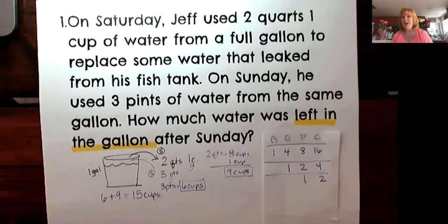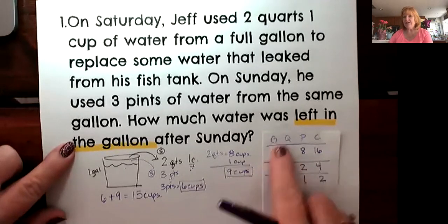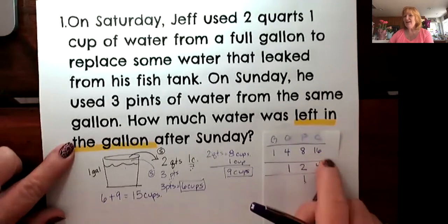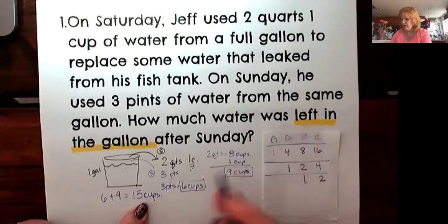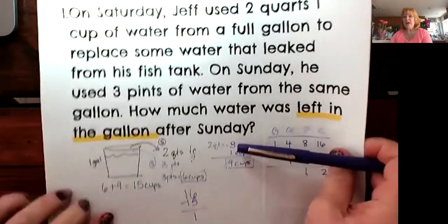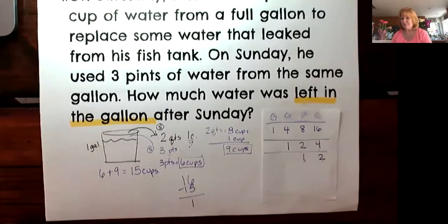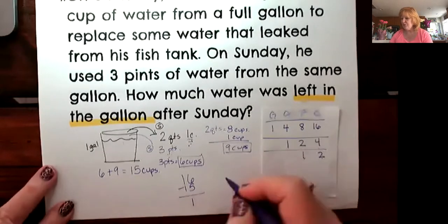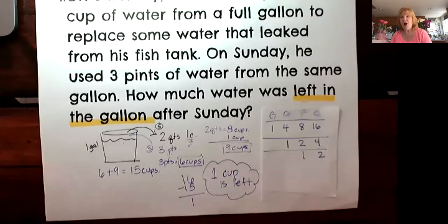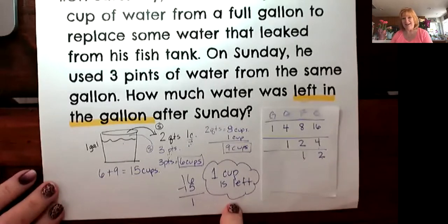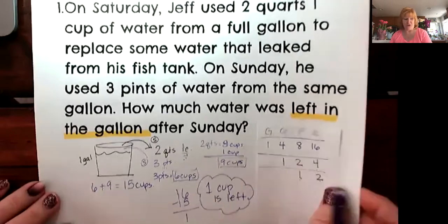Am I done? No, because it didn't ask me how many cups I had — it asked how much water was left. One gallon is equivalent to 16 cups, and 15 cups were taken out. So 16 cups minus 15 cups leaves me with one cup. Using step-by-step work and my conversion chart, the answer is one cup is left. You can't get to that answer without looking at all those conversions — super important.